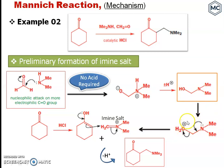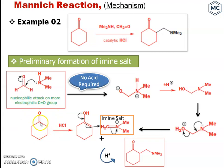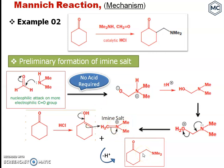Then, on protonation in the presence of acid — acid is required here — it dehydrates. First it protonates the OH, then it dehydrates, and forms the iminium salt. The second step of the mechanism: cyclohexanone in the presence of acid forms an enol. This enol reacts with the iminium salt and forms the Mannich base.